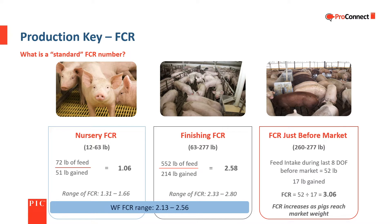As the pig gets close to market weight, feed conversion gets worse or higher. In the example, to gain the final 17 pounds — from 260 to 277 pounds — the pig ate 52 pounds of feed. When we divide 52 by 17, we get a feed conversion ratio of 3.06 pounds of feed for each pound of gain.